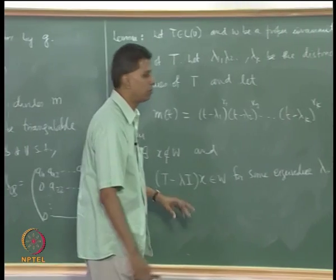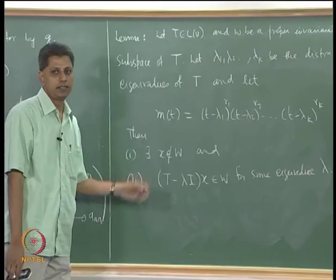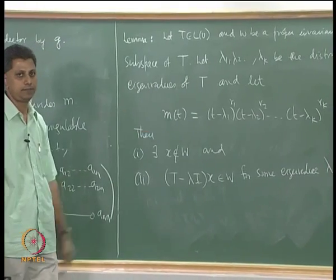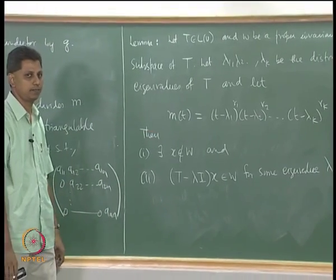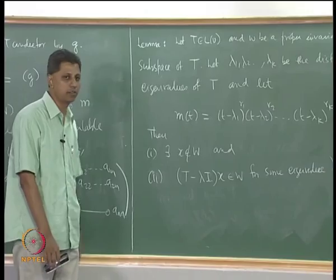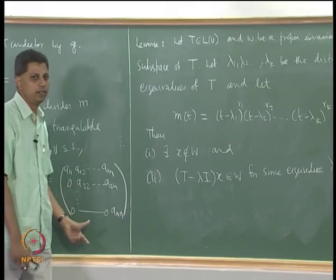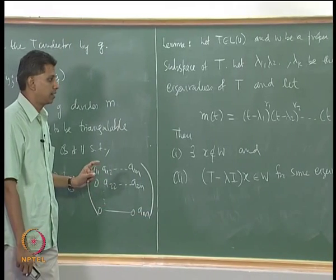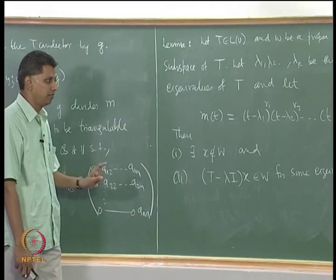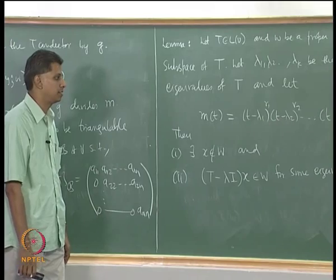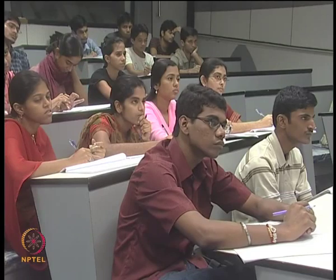Remember that the minimal polynomial appears here — it will play a crucial role in characterizing diagonalizability, which we will at least state today.